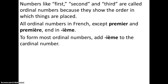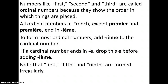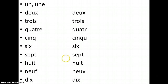To form all ordinal numbers, you add -ième to the cardinal number. However, if the cardinal number ends with an E, you drop that E before adding -ième. Also, numbers like fifth and ninth are formed irregularly. For fifth, five is cinq — it ends with Q — so we add a U after the Q before adding -ième. For ninth, the F becomes V.